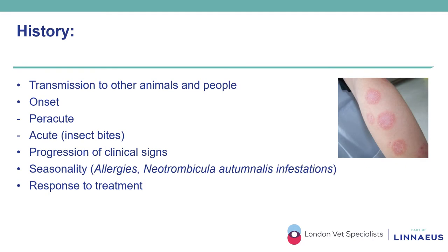Evidence of transmission to other animals and people is very important, and helps narrow down the list of differential diagnoses or even help directly make a diagnosis — as in this case where a family member developed lesions characterized by circular areas of erythema with marginal scaling and crusting, and similar lesions were also noted in the family cat. A diagnosis of dermatophytosis caused by Microsporum canis was made also with the help of this feature.